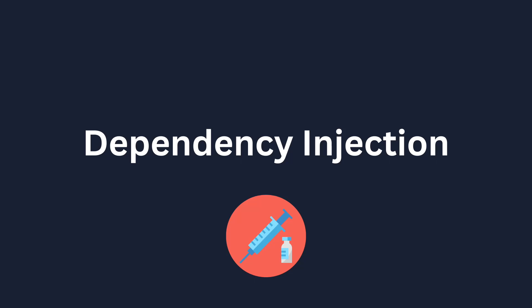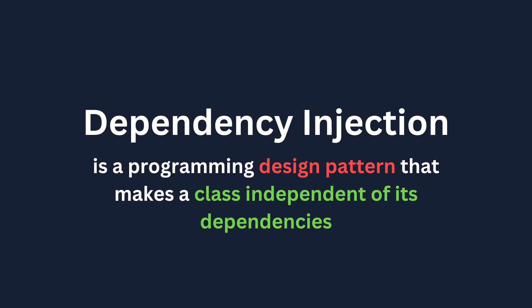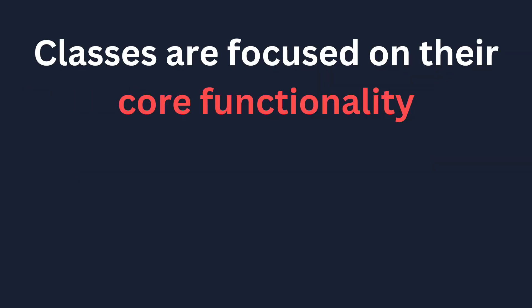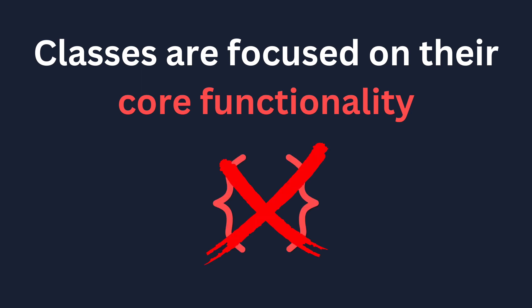Dependency Injection is a programming design pattern that makes a class independent of its dependencies. It achieves that by separating object creation from object usage. With Dependency Injection, classes are more focused on their core functionality and they don't have to worry about the details of how objects are created or configured.